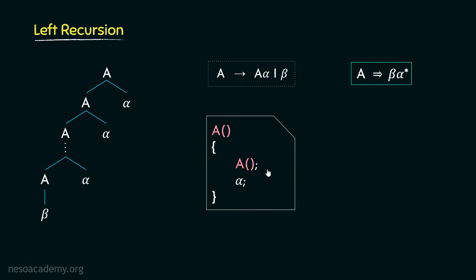Think about it: whenever this function is executed, every time it will first call itself. Thereafter, during its execution it will also call the same function A, which will be inside the called function's body. Since the first thing the function does every time is recursively call itself without checking whether the recursive call is even required or not, this structure may lead to an infinite loop and the execution may get stuck in it.